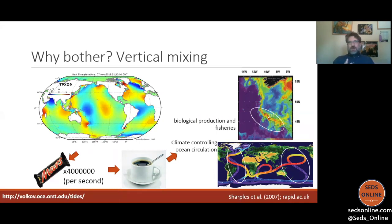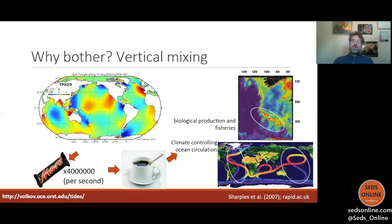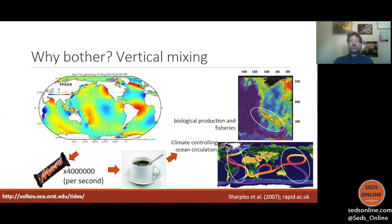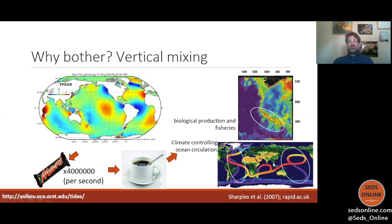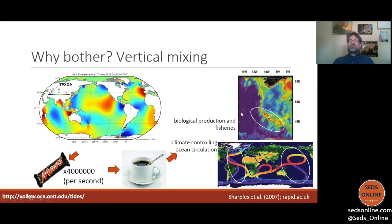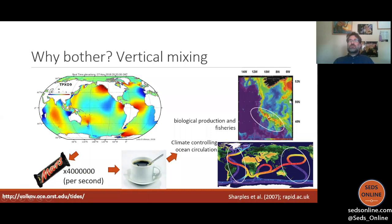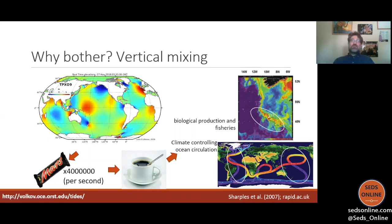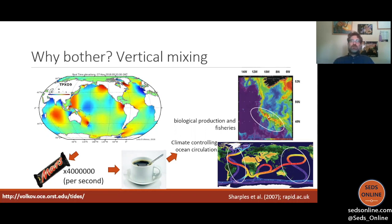The tides stir the ocean and pump cold water, nutrients, and other substances from the depths up to the surface. That is how we sustain the climate-controlling overturning circulation — bringing deep cold water back up and regulating climate. A satellite image of chlorophyll off the southern tip of Ireland and southwestern UK shows a bright band of high primary production between the 200 and 500 meter depth contours. This is the equivalent of grass in the ocean, and that's where the fishing boats go because the tide pumps nutrients up to the surface layer.